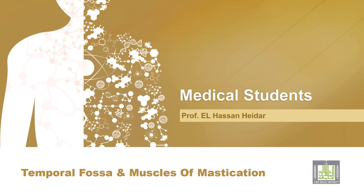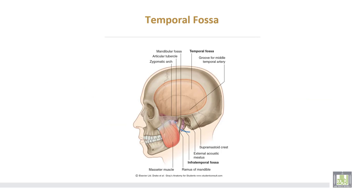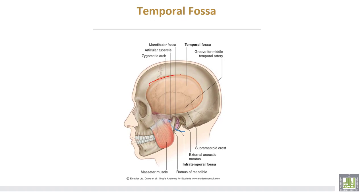The temporal fossa is found below the temporal line, limited inferiorly by the infratemporal crest of the greater wing of the sphenoid, and is continuous with the infratemporal fossa. Posteriorly, the squamous part of the temporal bone passes deep to the zygomatic arch, and laterally it is formed by the lateral fascia. The medial wall is formed by four bones: frontal, parietal, temporal, and the greater wing of the sphenoid, all forming an H-shaped suture called the pterion.